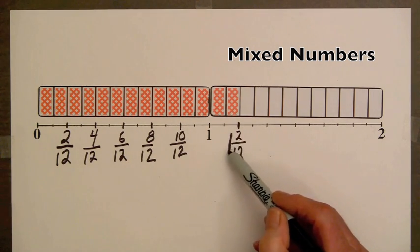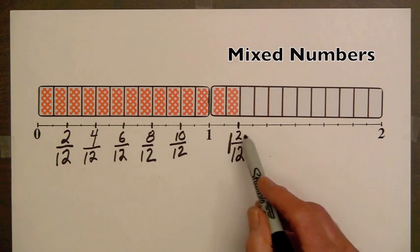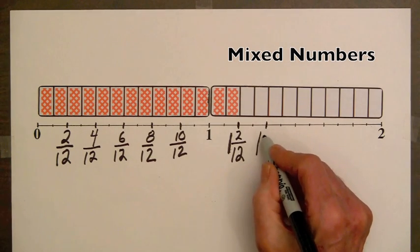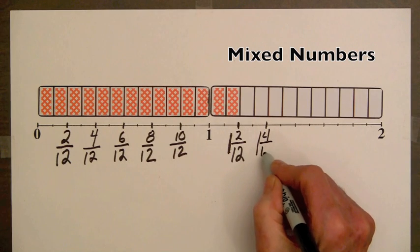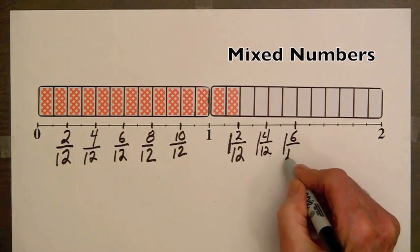Now, this number is a mixture of the whole number 1 and the fraction 2 twelfths. Now, we can continue as before. We'll write the mixed numbers. For this mark, it's going to be 1 and 4 twelfths. 1 and 6 twelfths.